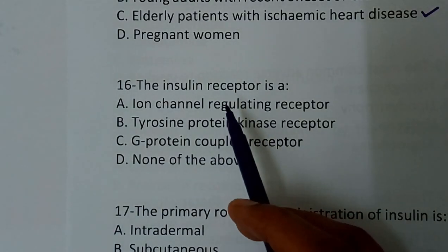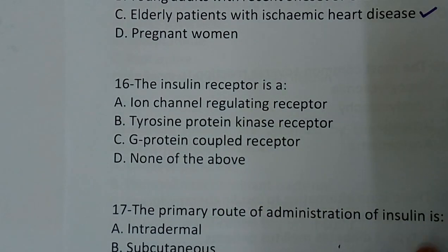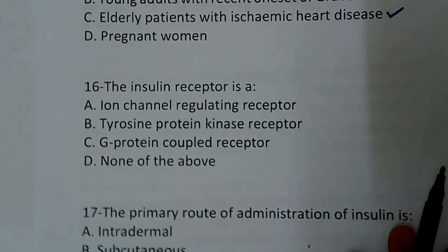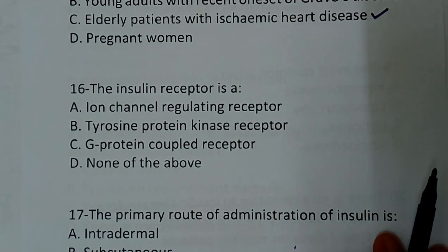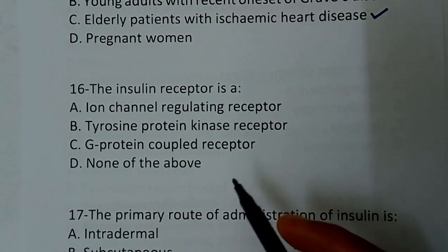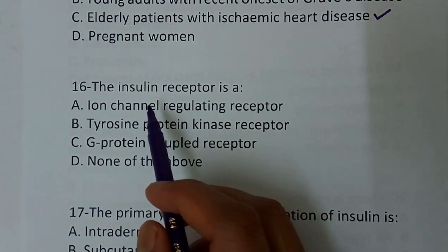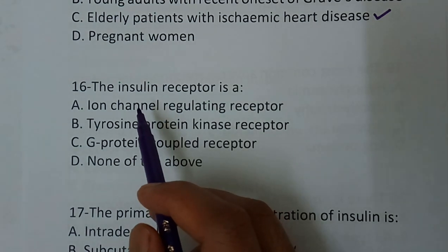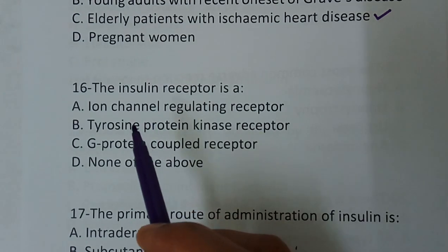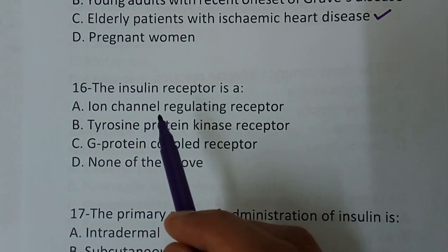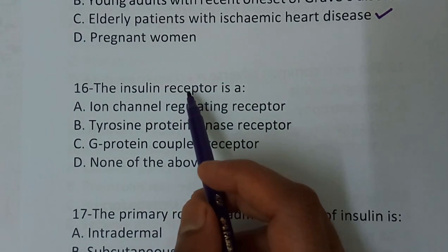Hi everyone, welcome to another video of NS Pharma. Today we will see some important multiple choice questions from pharmacology in the chapter insulins and oral hypoglycemic drugs. You have to study the chapter completely for the preparation of the pharmacist competitive exam. These questions will be helpful for those preparing for exams like GPAT, government pharmacist exam, as well as the prometric exam for the GILF.